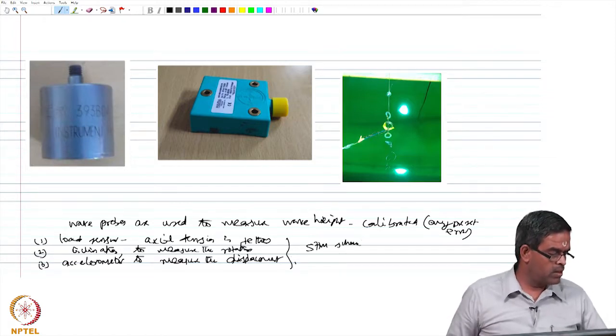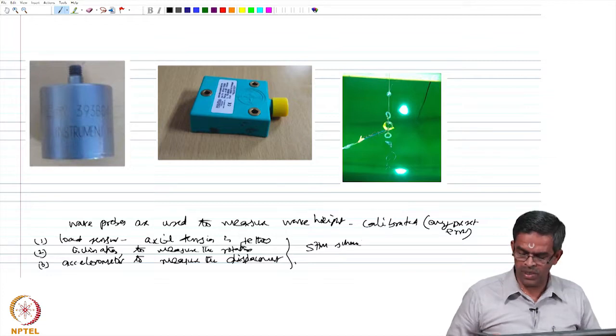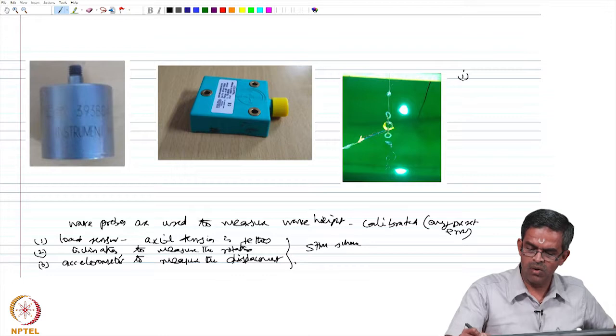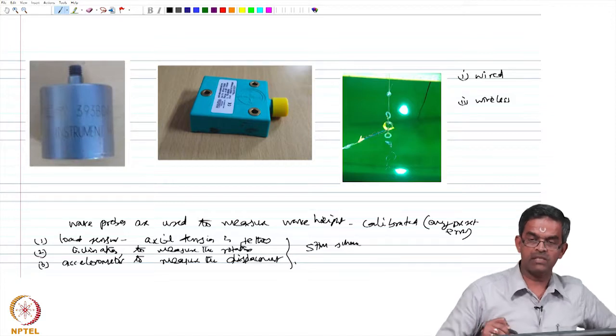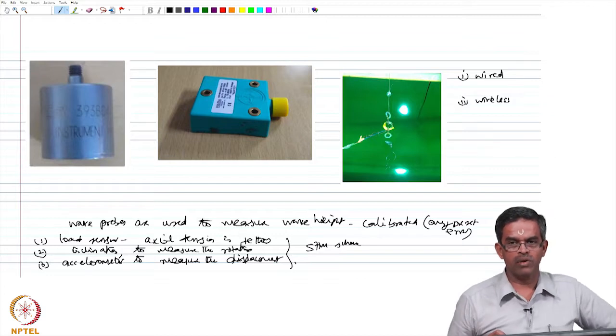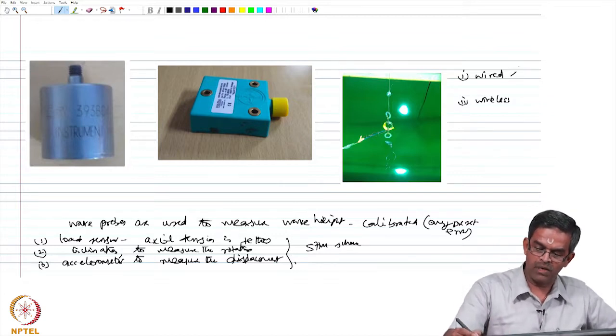Let us quickly look at what are the two types of systems we are proposing. We are proposing two systems: one is a wired system, the other is a wireless system, as we compared them in the previous lecture using buoyant leg storage regasification platform. Similarly, in TLP we did the same thing by actually employing two types of health monitoring systems - one is wired, another is wireless. Data acquisition is done on scaled model using both the systems.